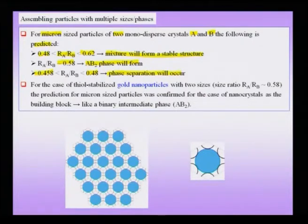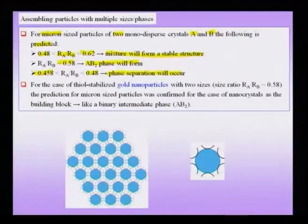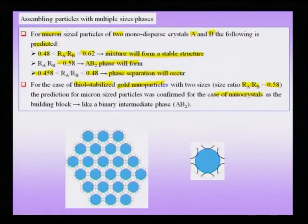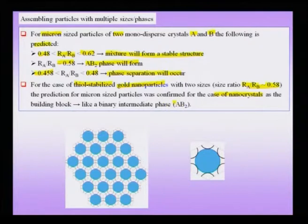It is important to test whether binary mixtures of the type AB₂ can be formed with spheres in the nanoscale. People have tried gold particles stabilized with thiol. If the size ratio is close to 0.58, the prediction seen for micron-size particles was confirmed for nanocrystals as well — a stable AB₂ phase forms, which can be thought of as a binary intermediate phase.